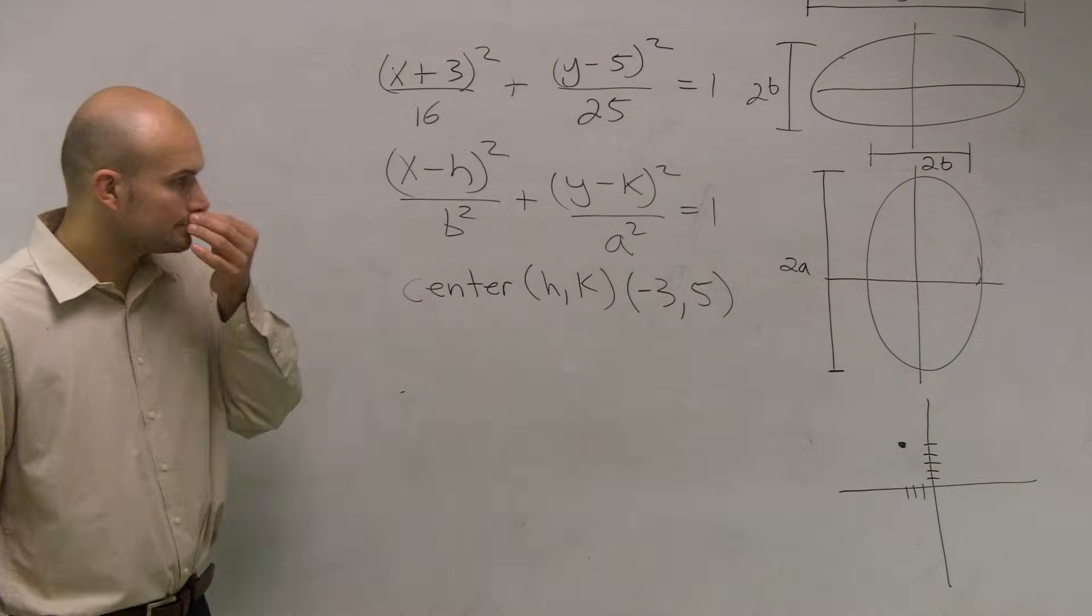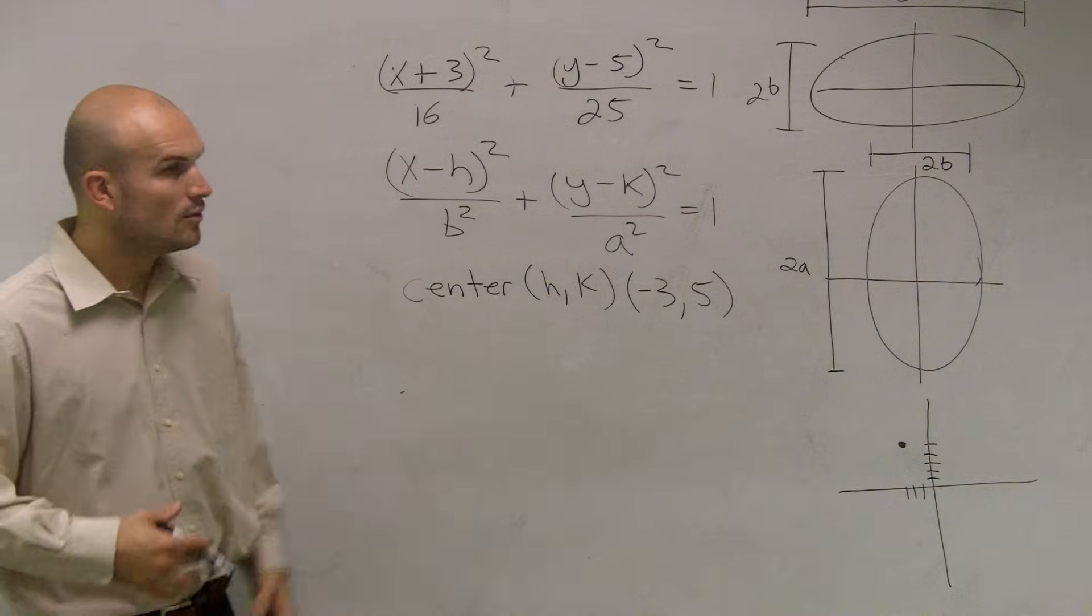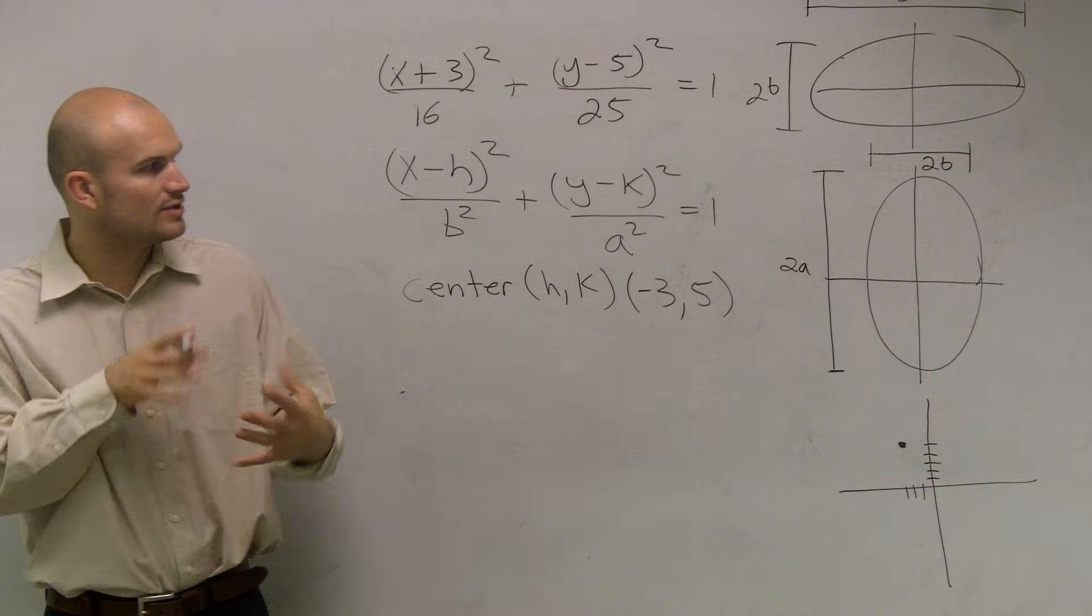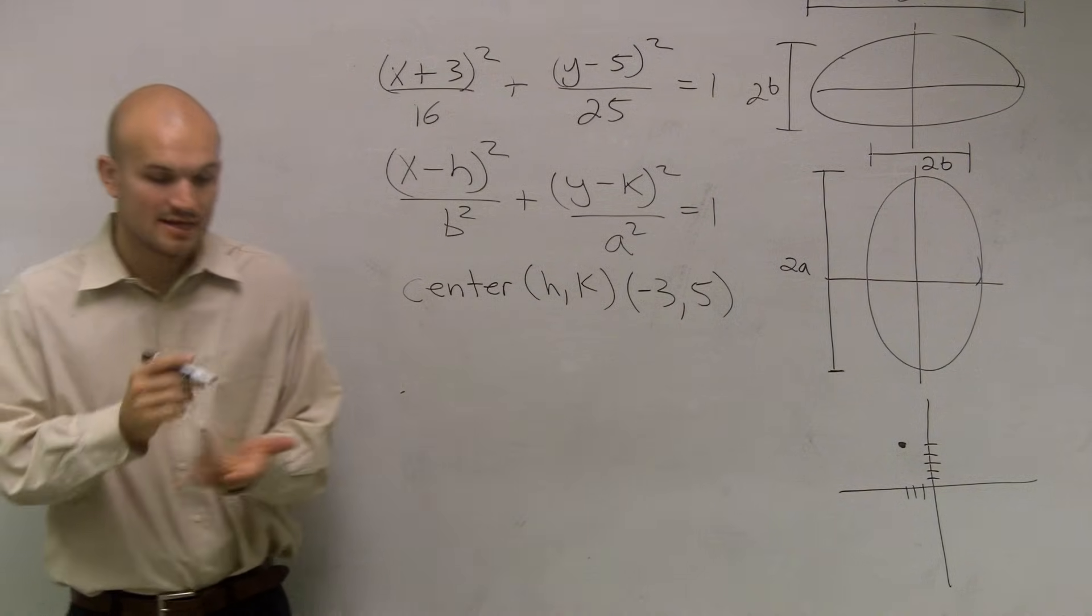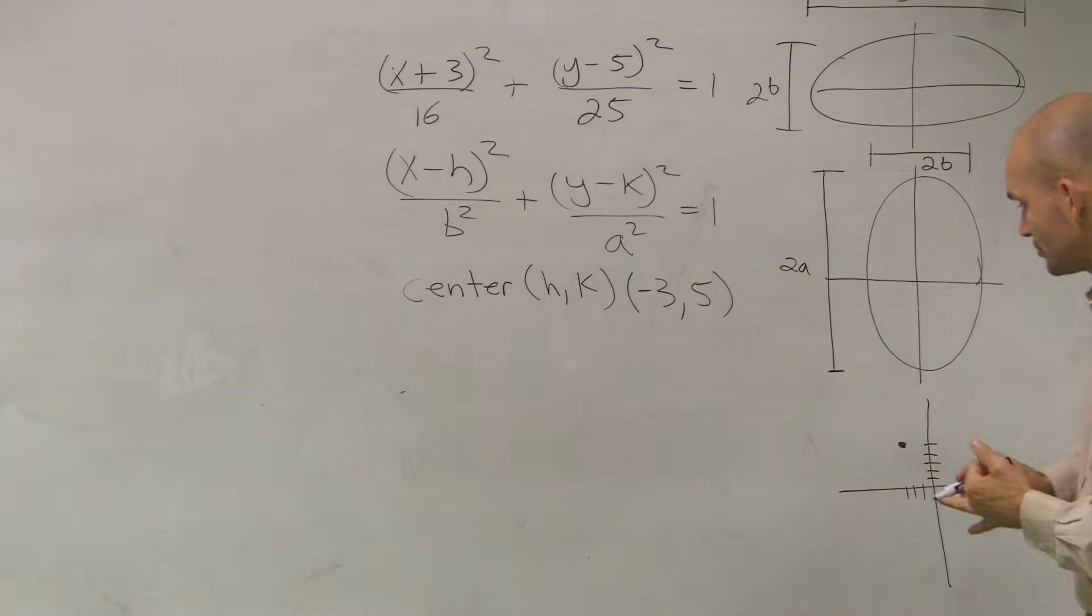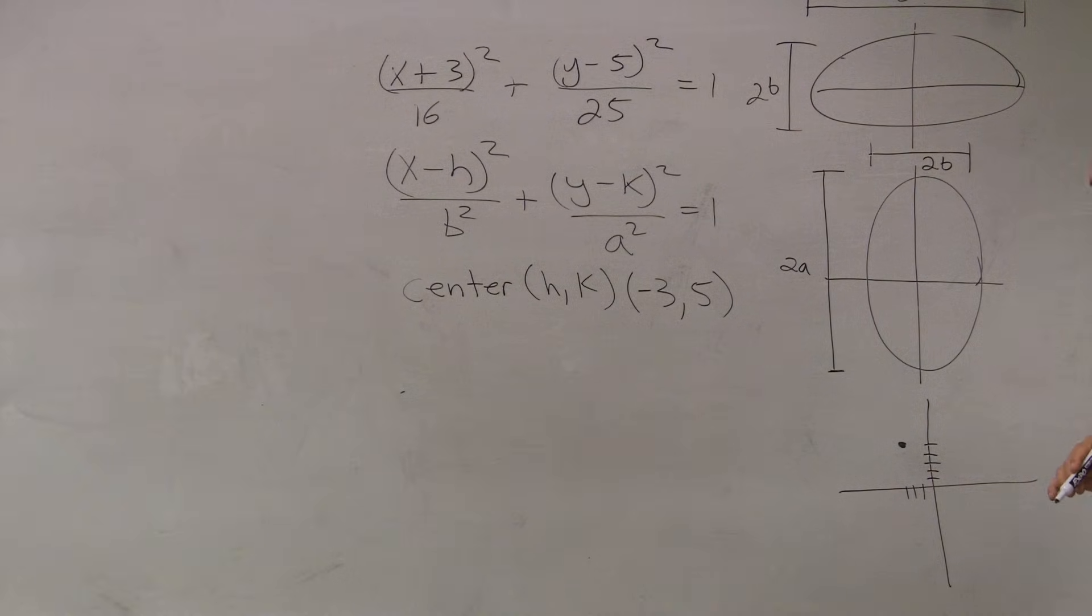Now, the next thing is we need to determine what our vertices are. Well, the main important thing that you need to understand why we have that major axis is because your vertices, your vertex, and your foci all lie on your major axis of symmetry. So we determine if it's going to have a major axis, a vertical major axis of symmetry.